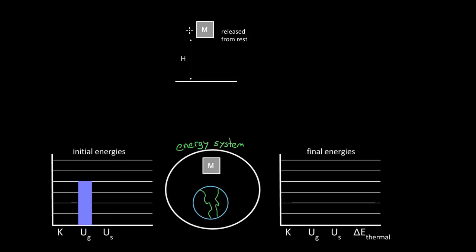What did that energy turn into? If this was the initial position, what kind of energy do we have when the mass gets right above the surface of the Earth, just before it hits? There's going to be kinetic energy, because the mass will be moving right before it hits the Earth, and kinetic energy is the energy an object has because of its motion. How much kinetic energy? Well, energy is going to be conserved in our system. Since I started with four units of gravitational potential energy, I should end with four units of kinetic energy.